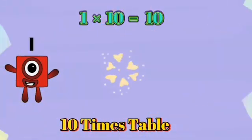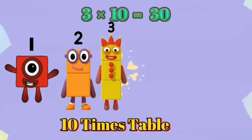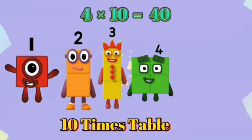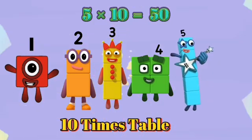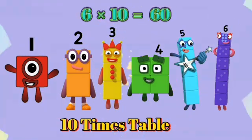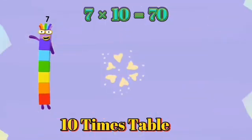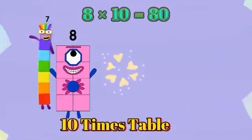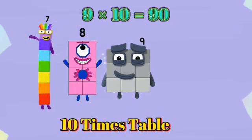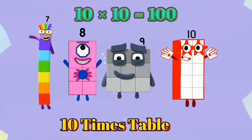1 times 10 is 10. 2 times 10 is 20. 3 times 10 is 30. 4 times 10 is 40. 5 times 10 is 50. 6 times 10 is 60. 7 times 10 is 70. 8 times 10 is 80. 9 times 10 is 90. 10 times 10 is 100.